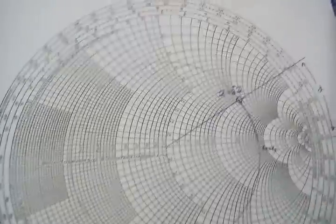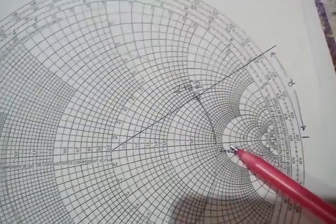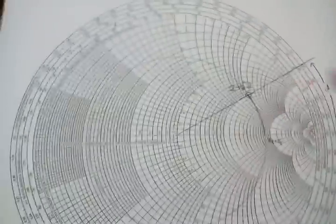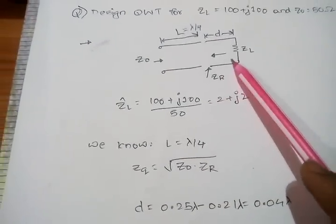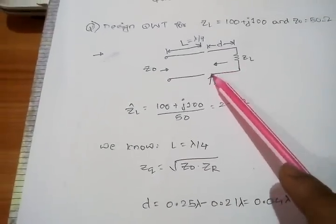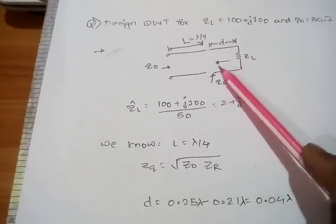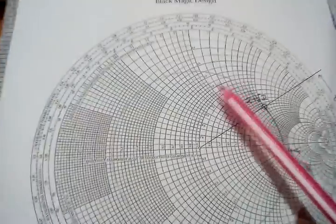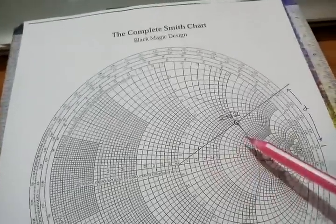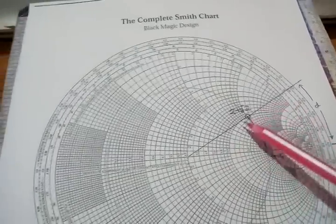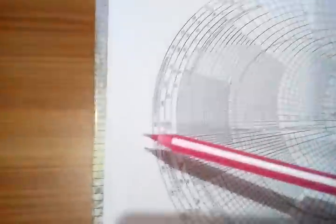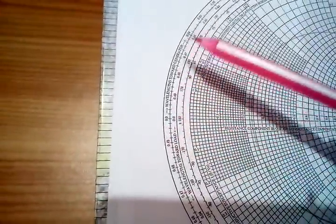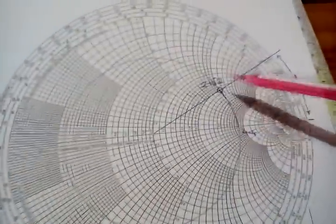Now what I have done is this. From load, I am moving towards generator, towards the generator. This is my load. I have marked. I need to move towards generator. Let me show you this direction. The clockwise direction is towards generator.